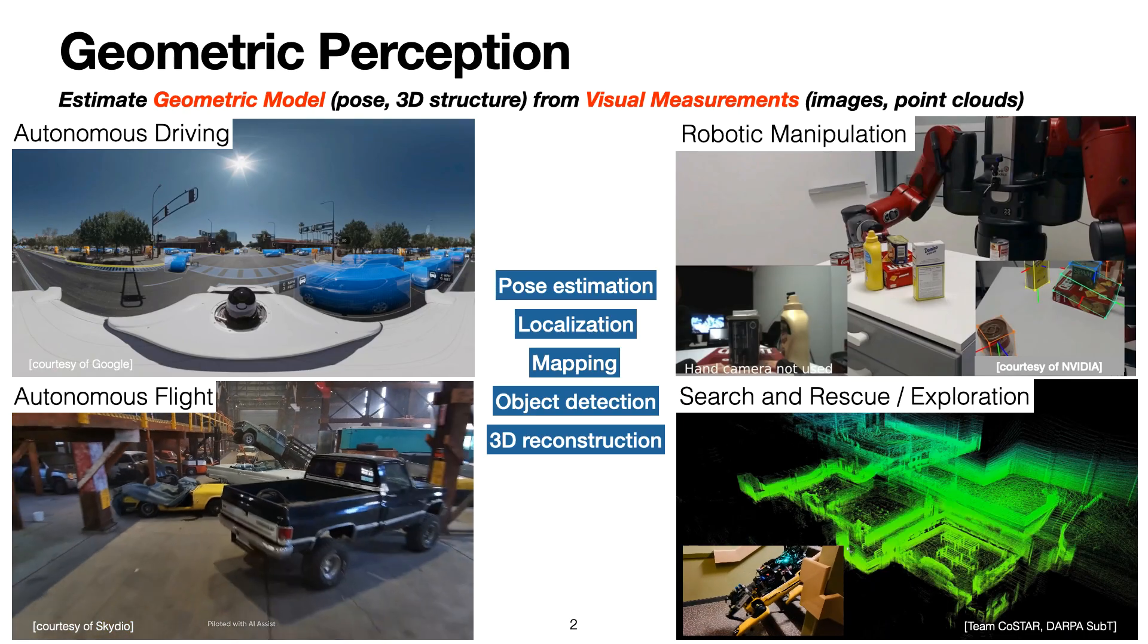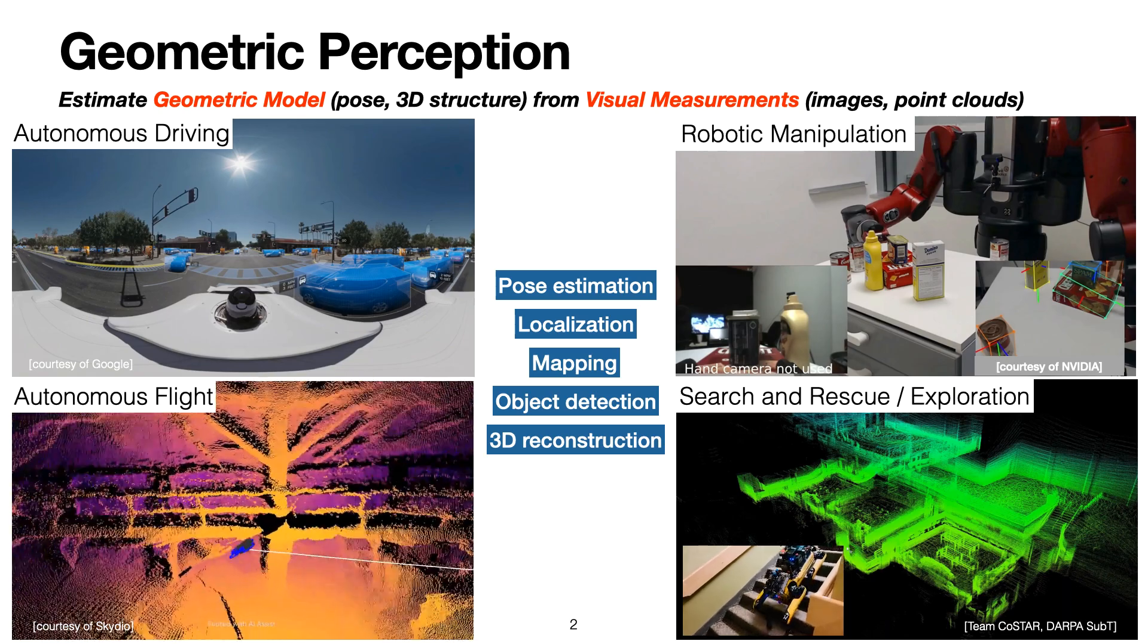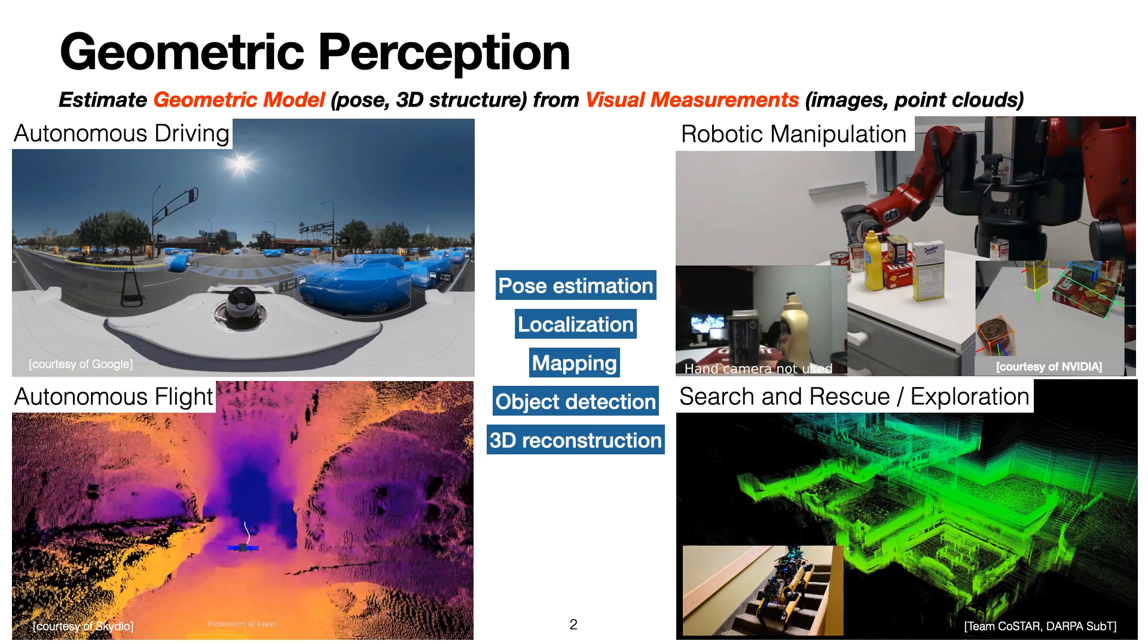Geometric perception is a task of estimating geometric models from visual measurements. It covers a broad spectrum of problems and finds extensive applications in robotics and computer vision.